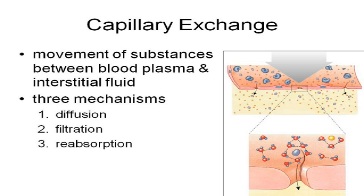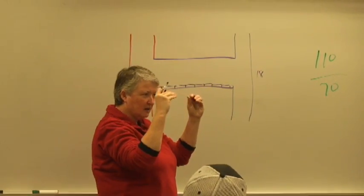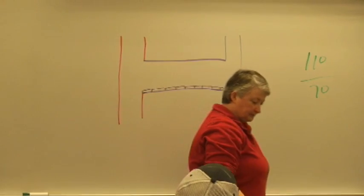Most of your capillaries are continuous capillaries. You've also got fenestrated and sinusoid types. You've got this thin layer of endothelial tissue — simple squamous epithelial tissue — that's what you've got across the capillary wall. It's a real thin cell.